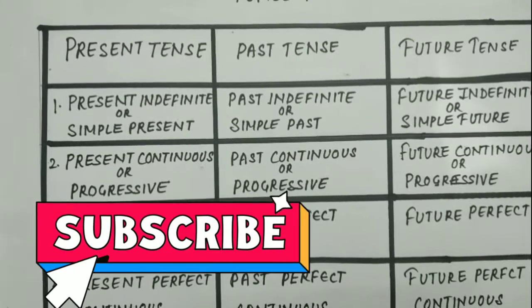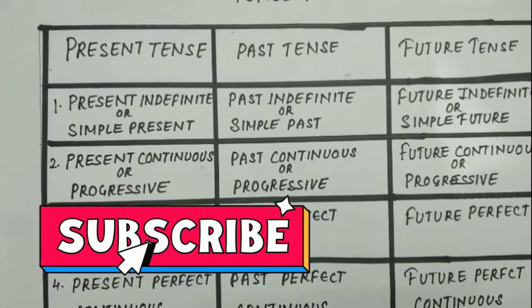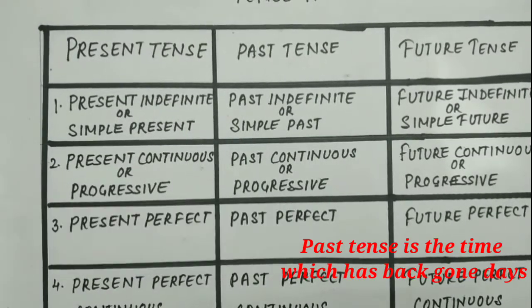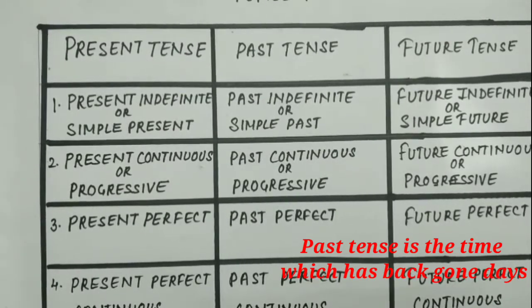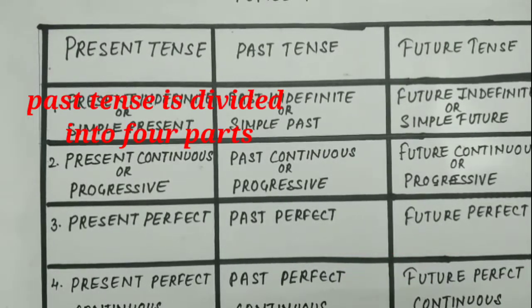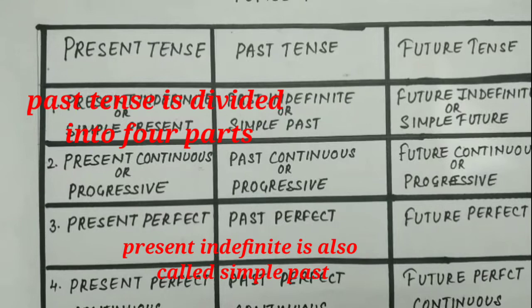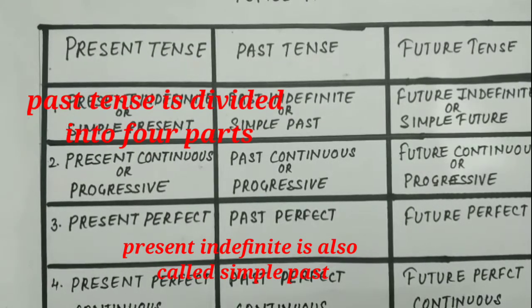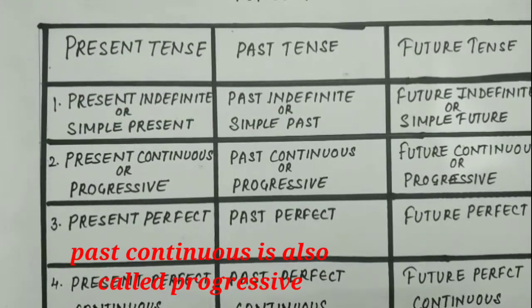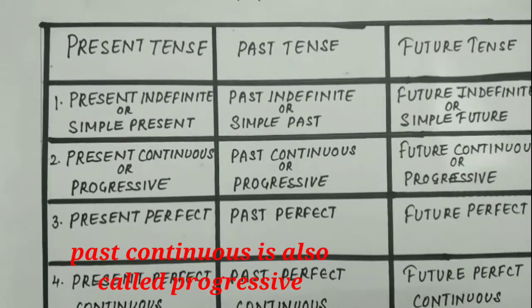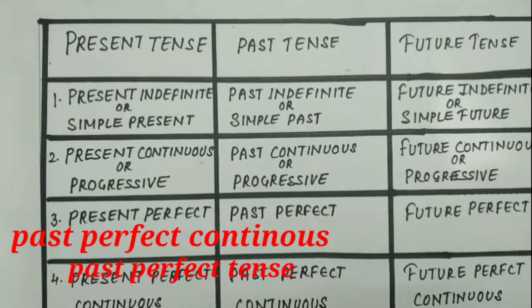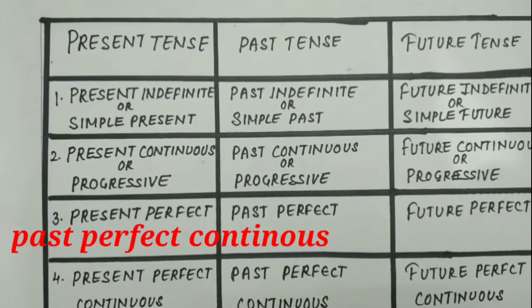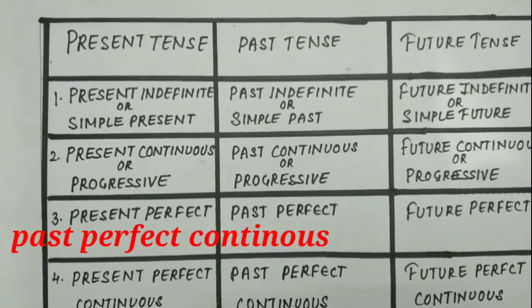Past tense — bhoot kaal. Bita hua samayi jo hotte hain voh past tense hotte hain. Past tense ke bhi chare parts hotte hain. Past indefinite ko simple past bhi kehate hain. Aur second jo hai iska part — past continuous, aur progressive bhi kehate hain. Third hain past perfect tense. Aur ismein fourth hain past perfect continuous tense.